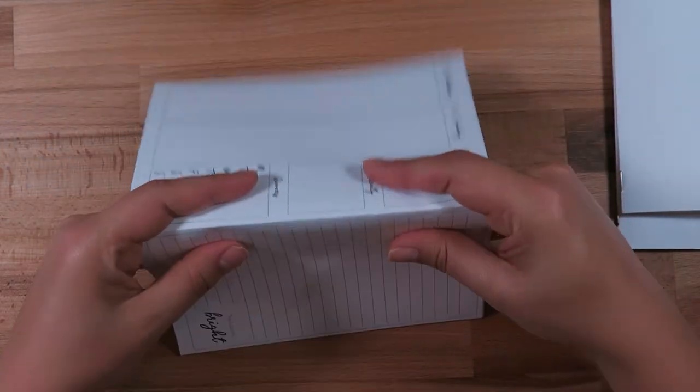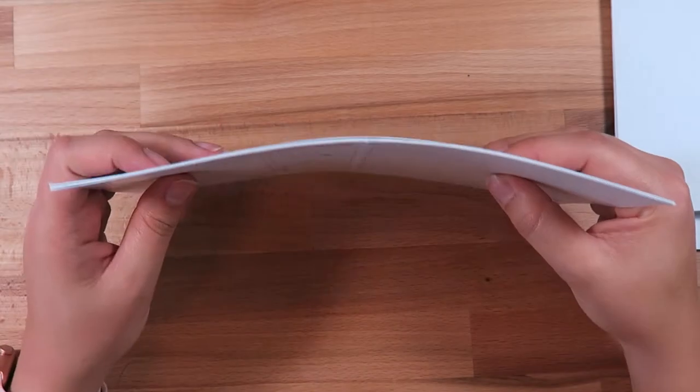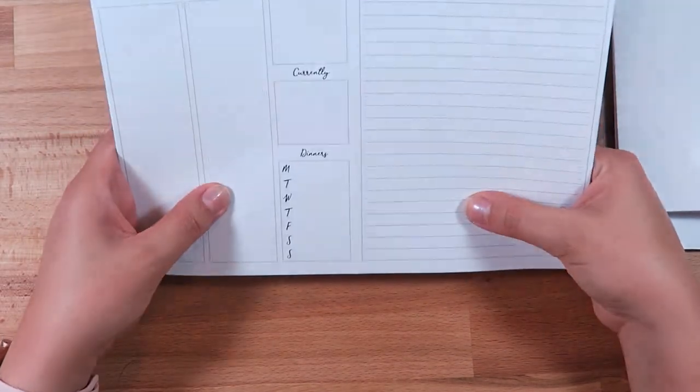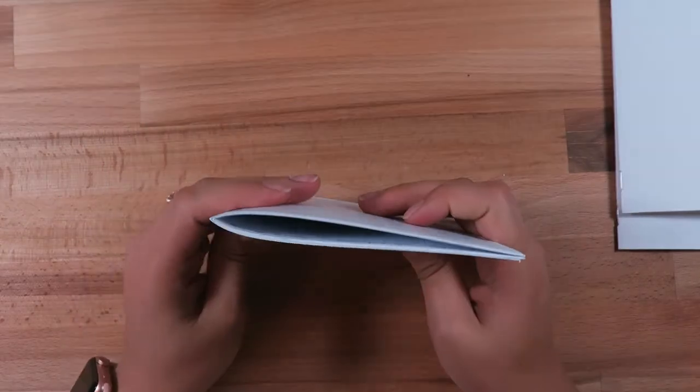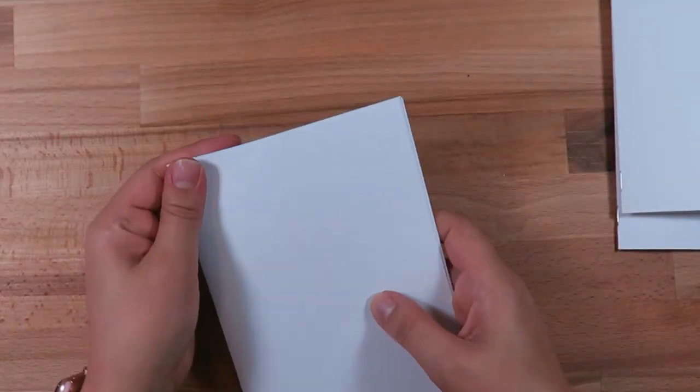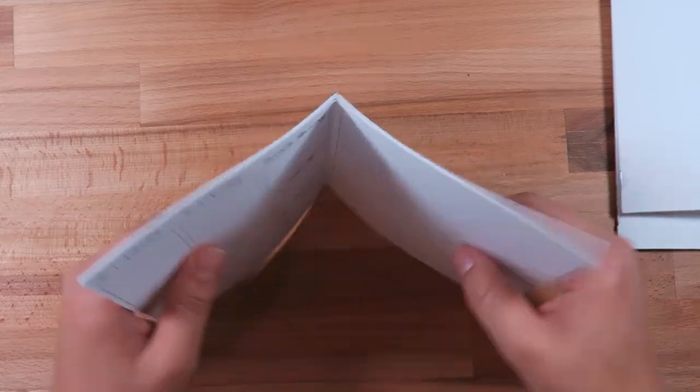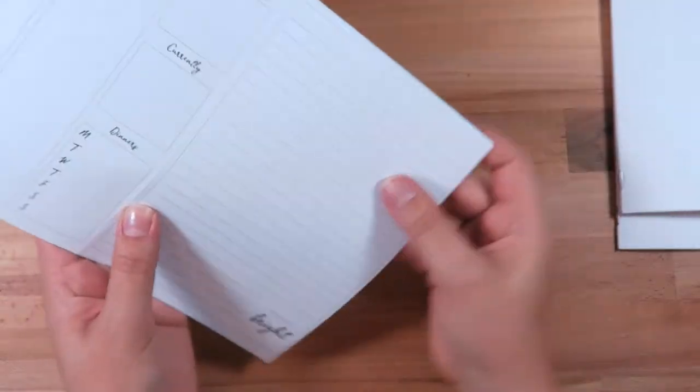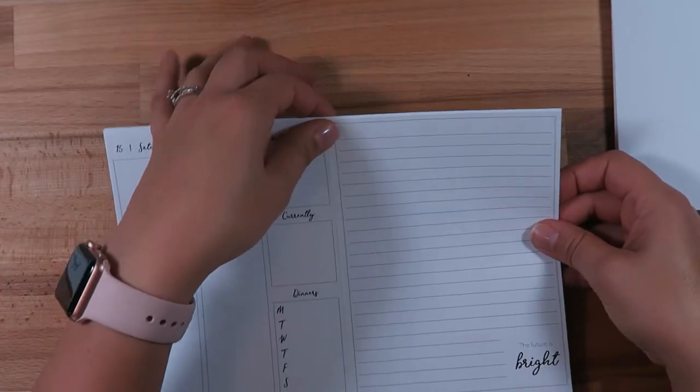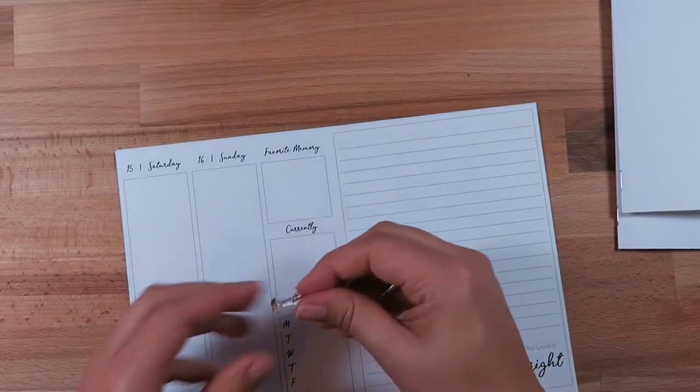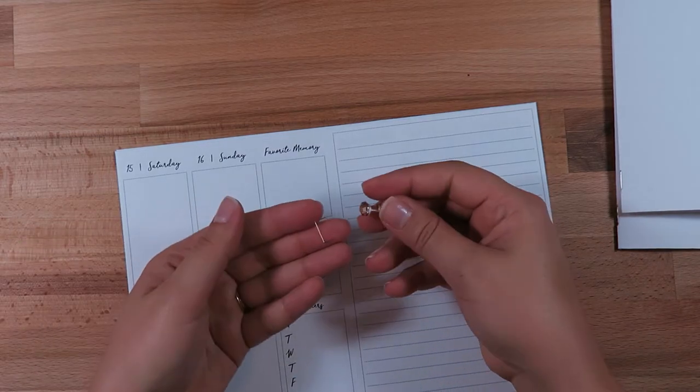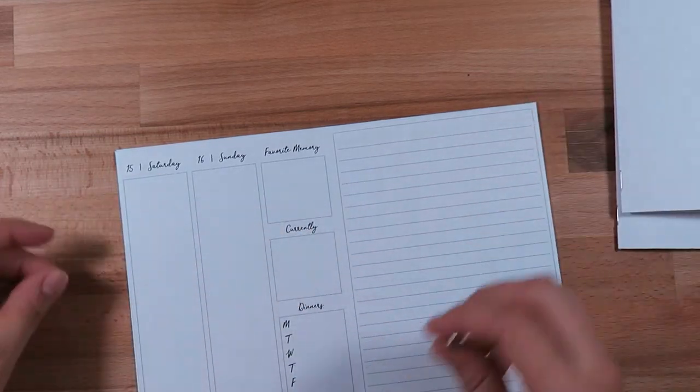I also wanted to show you really quick how I bound the sides of my printable inserts. You can use these for any inserts. What you'll need to do is print them off following the instructions, then fold them. Once you take it open, you'll need a push pin and then two staples.